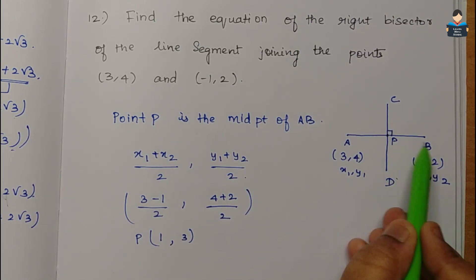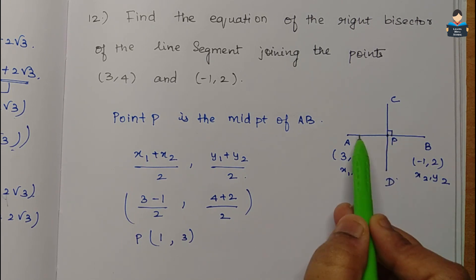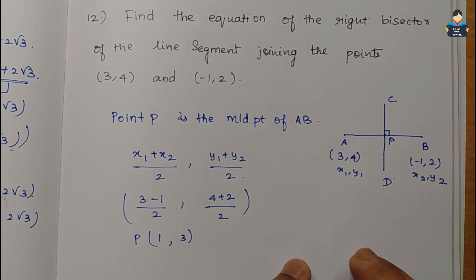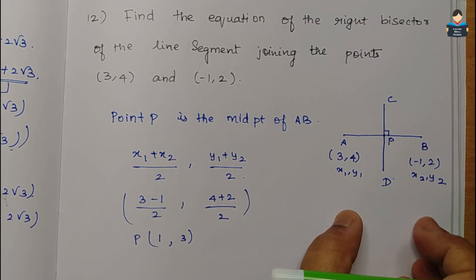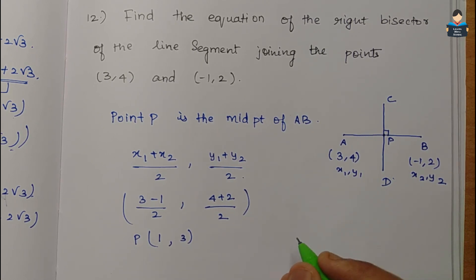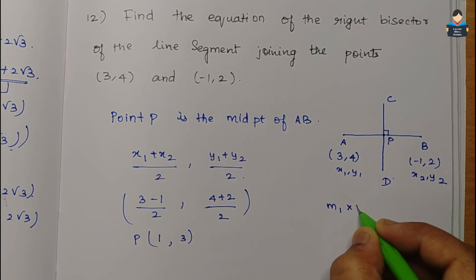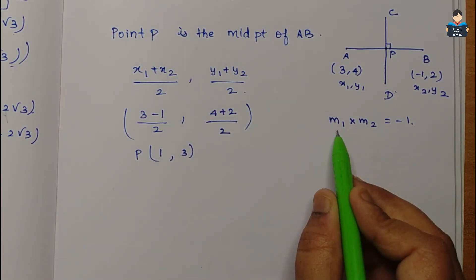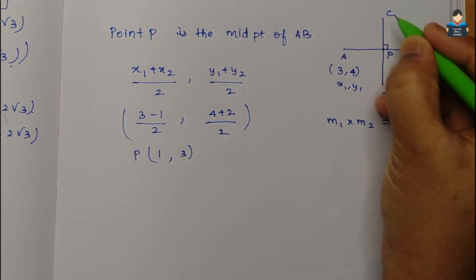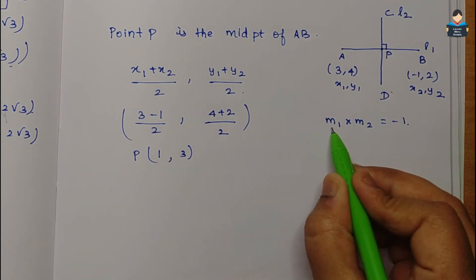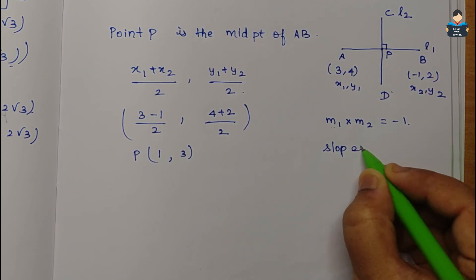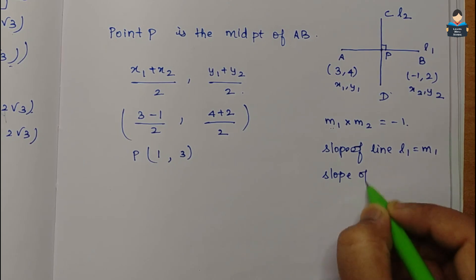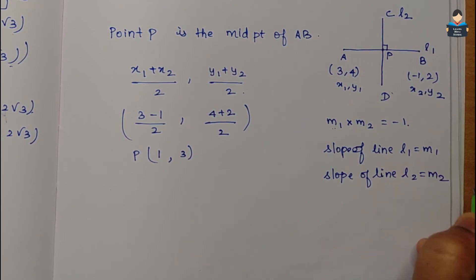Since CD is the perpendicular bisector of AB, lines CD and AB are perpendicular to each other. When two lines are perpendicular, the product of their slopes satisfies: slope of L1 multiplied by slope of L2 equals minus 1, that is m1 × m2 = -1.